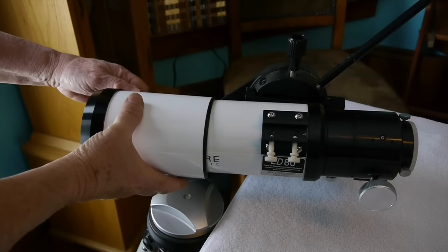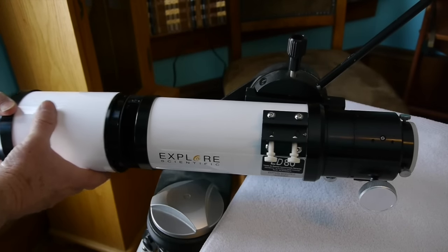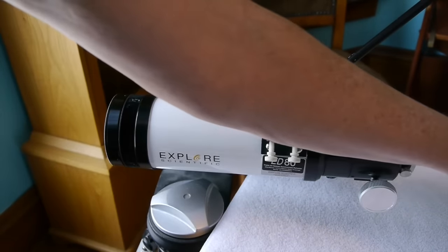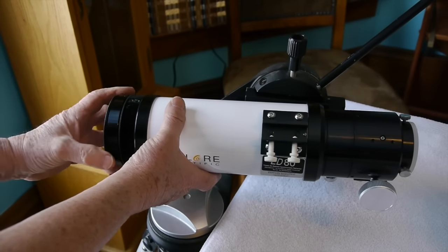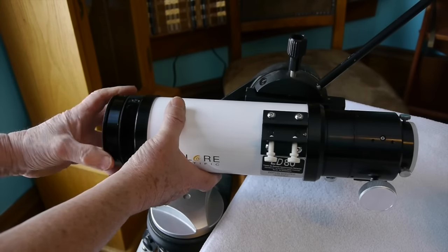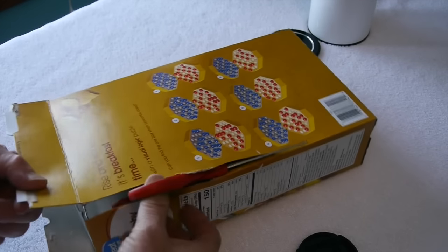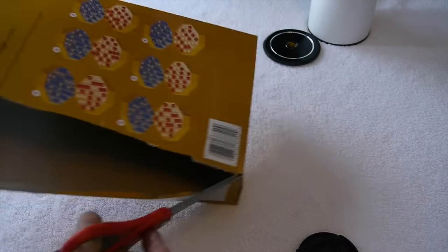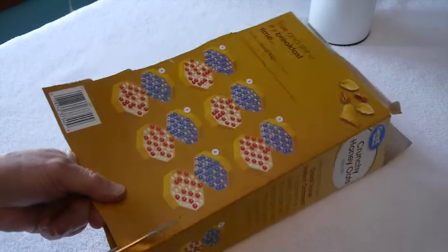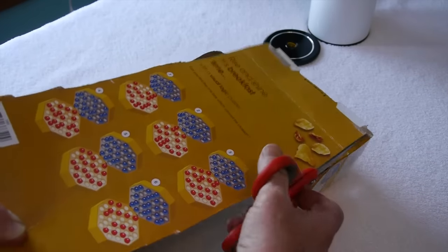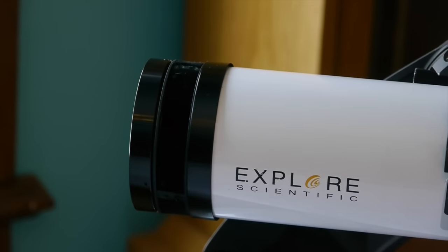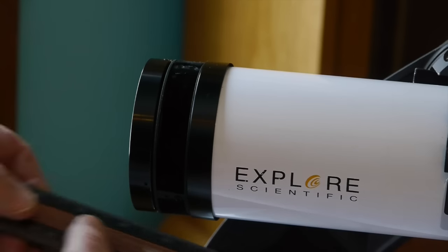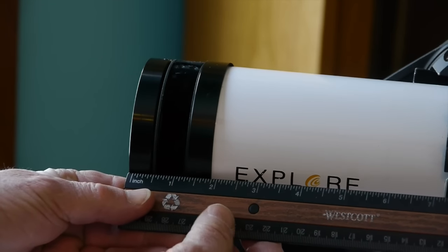Let's get started. This is the little Explore Scientific 80 millimeter telescope. We'll take the dew shield off and remove the lens cover. I needed some thin cardboard that I could use to make the ring that's going to go around the end of the telescope. I thought that cereal box material would wrap around the end of the telescope easily.